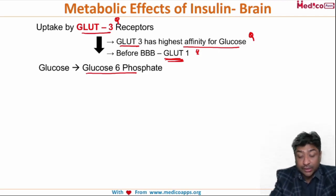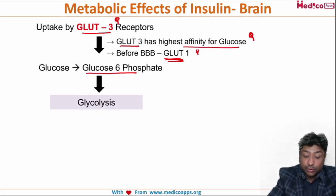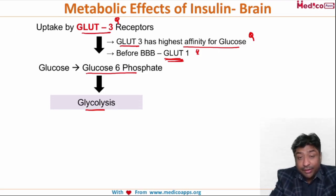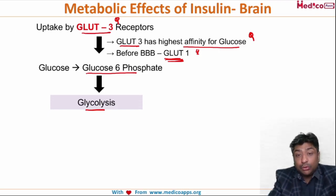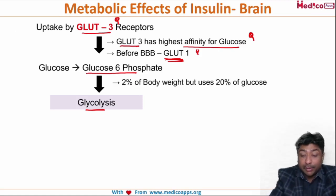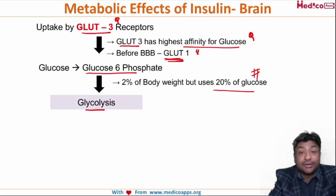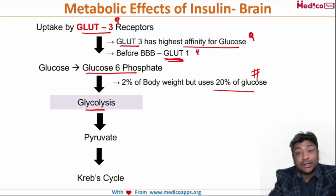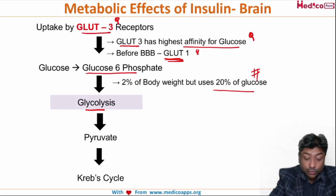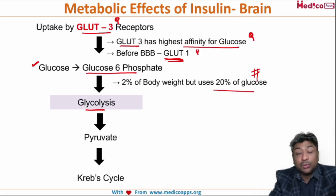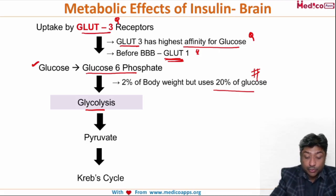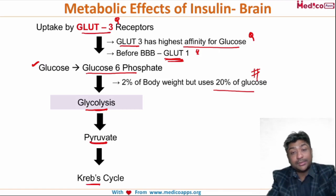Now what happens to this glucose-6-phosphate? It undergoes glycolysis. A very interesting fact: even though the brain is just 2% of body weight, it utilizes as much as 20% of the body's glucose. Importantly, this glucose in the brain never goes into any anabolic pathway — only the oxidative pathway occurs.